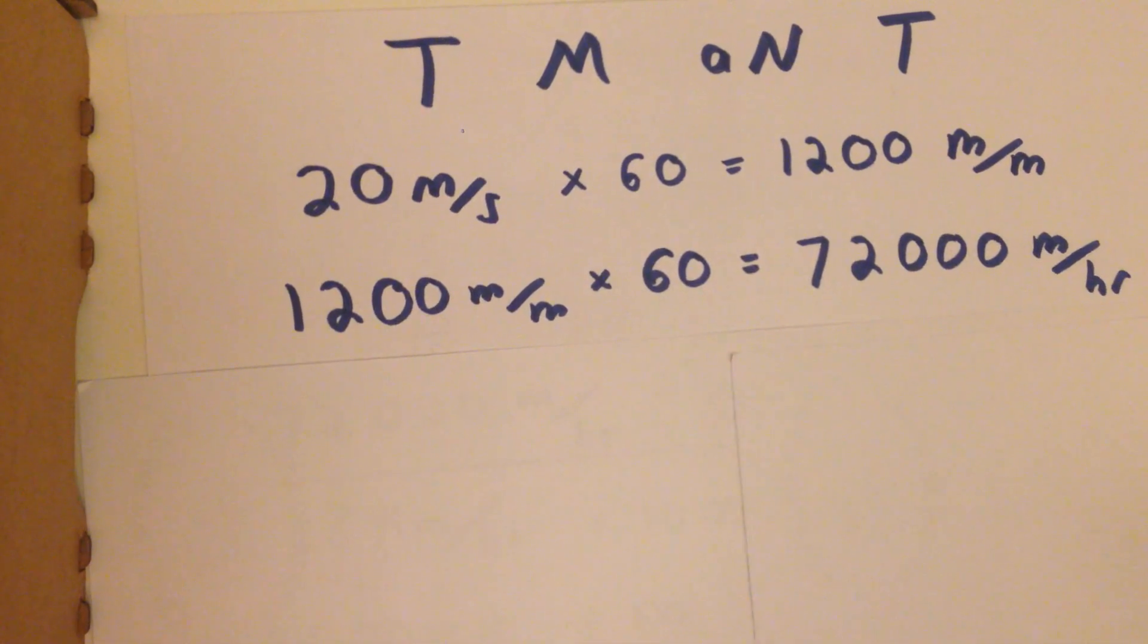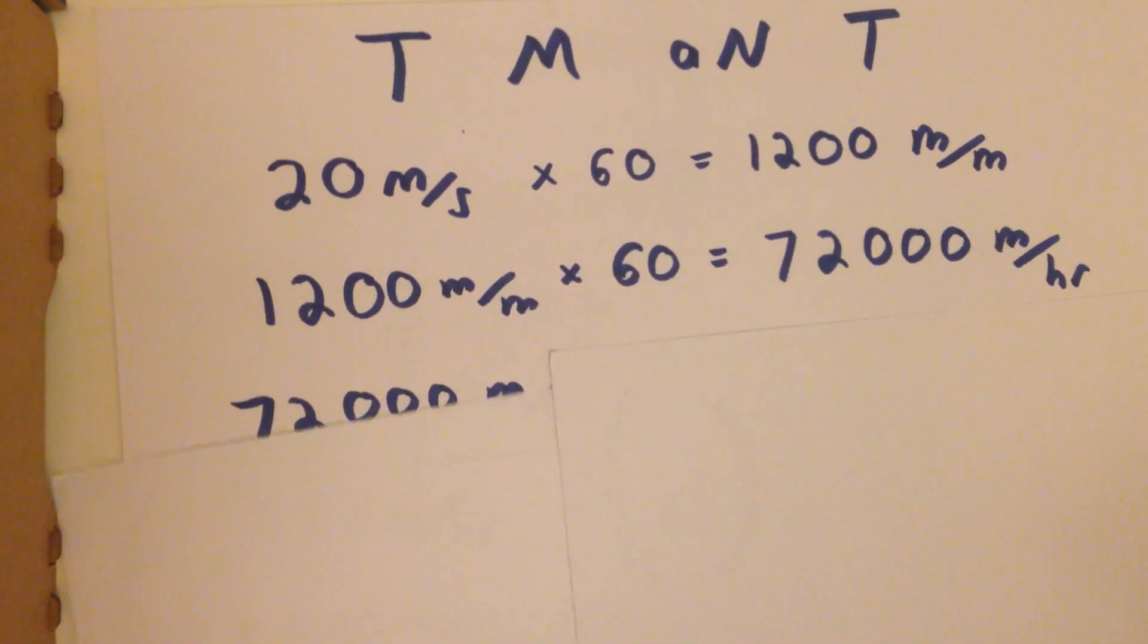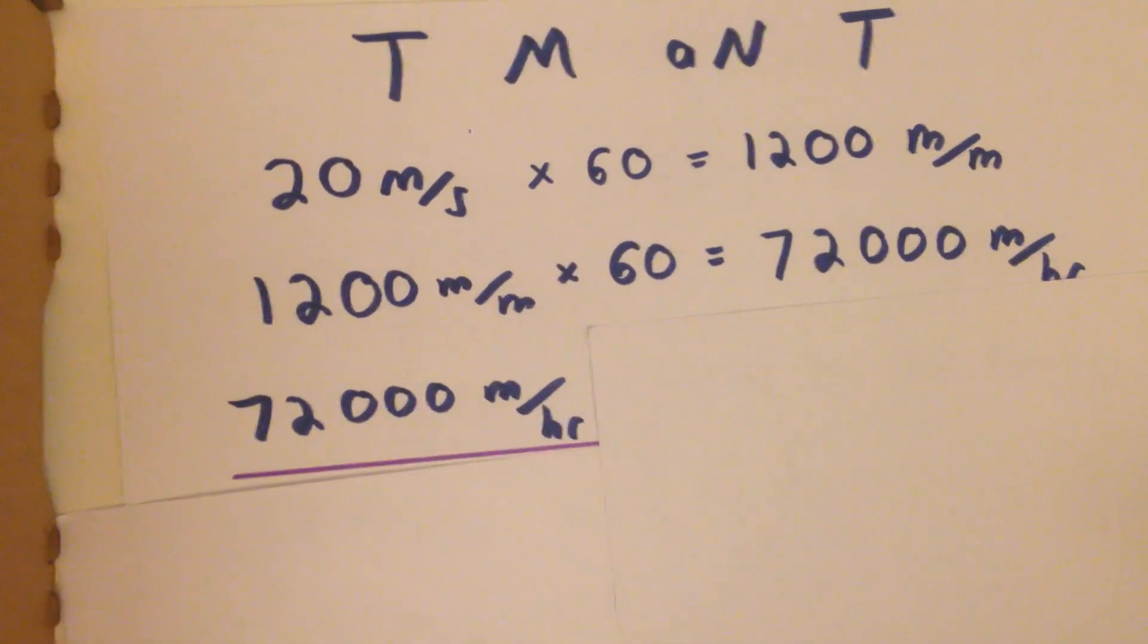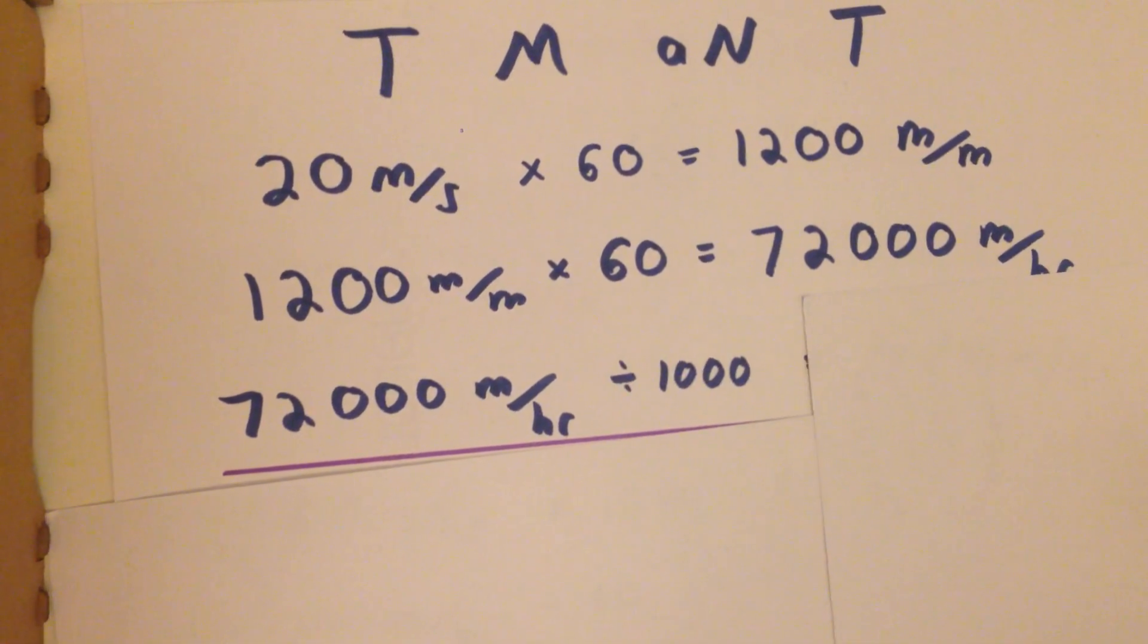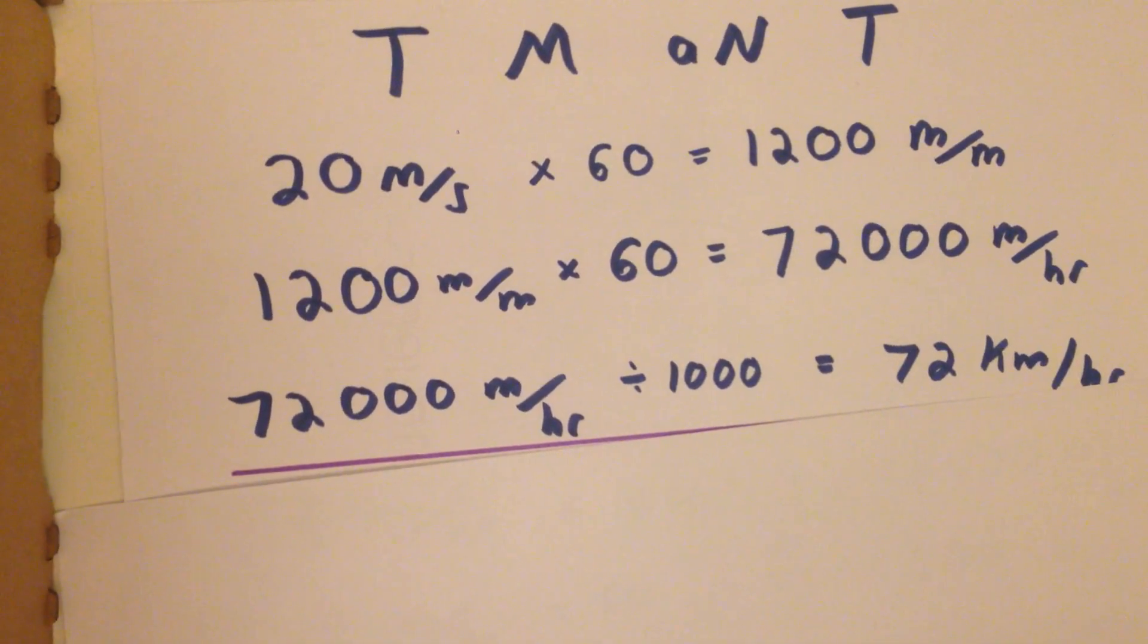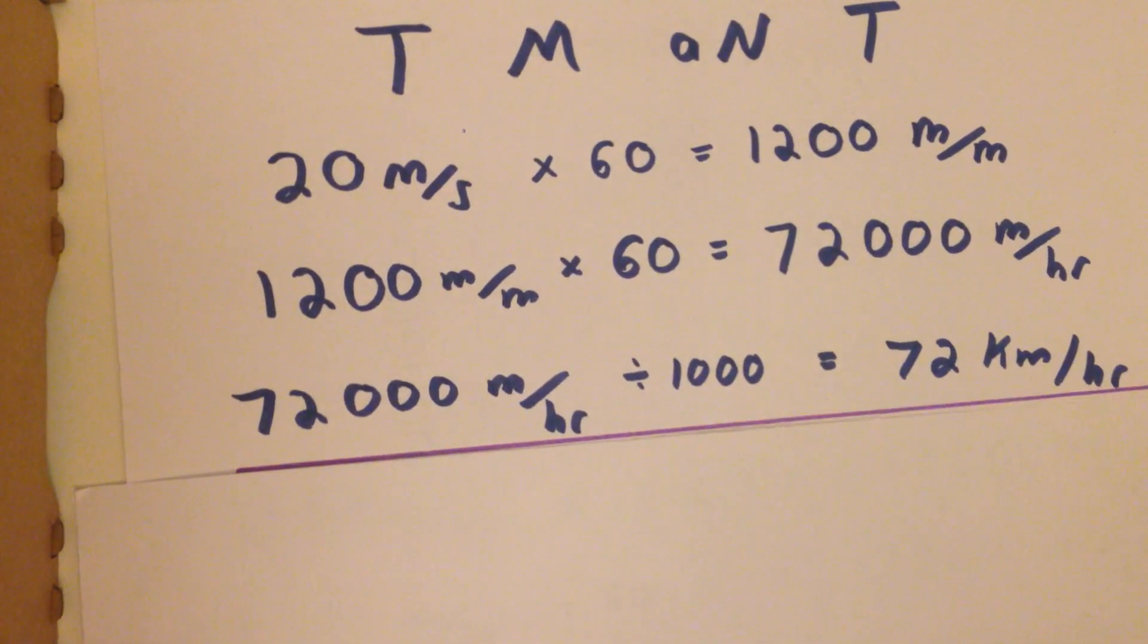But we want to change that into kilometers. You know there's 1,000 meters in a kilometer, so you just divide by 1,000. And there you go. 20 meters per second is 72 kilometers per hour.